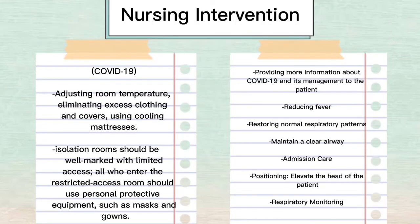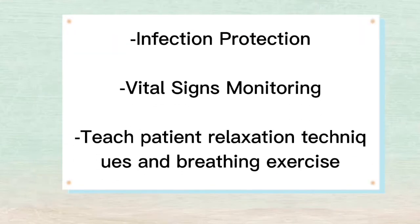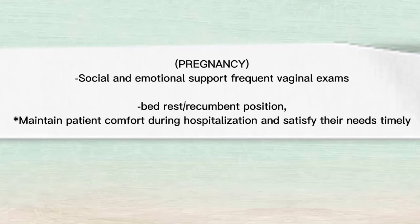Nursing interventions for COVID-19 include: adjusting room temperature, eliminating excess clothing and covers, using cool mattresses, ensuring the isolation room is well marked with limited access. All who enter the restricted access room should use personal protective equipment such as masks and gowns. Provide more information about COVID-19 and its management to the patient, reduce fever, and restore normal respiratory patterns. Maintain a clear airway, admission care, positioning — elevate the head of the patient, respiratory monitoring, infection protection, vital signs monitoring, and teach the patient relaxation techniques and breathing exercises. For pregnancy: social and emotional support, frequent vaginal exams, bed rest and recumbent position, and maintain patient comfort during hospitalization.